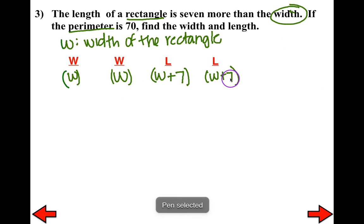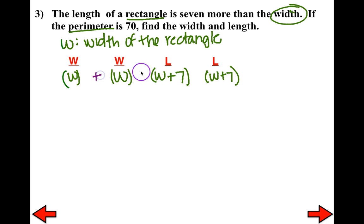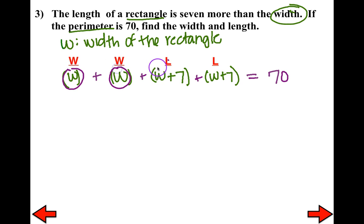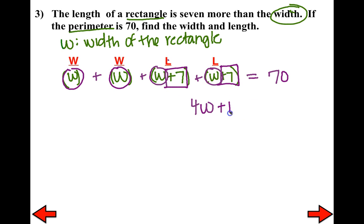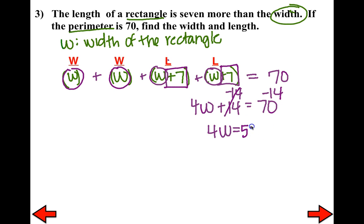Combining like terms for the perimeter: W + W + (W + 7) + (W + 7) = 70, which gives 4W + 14 = 70. Subtract 14 from both sides: 4W = 56. Divide both sides by 4: W = 14.